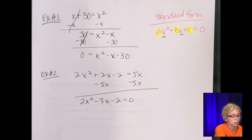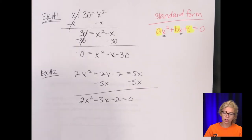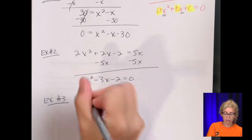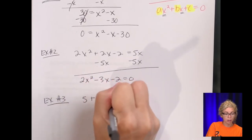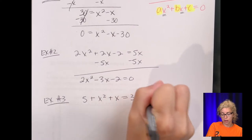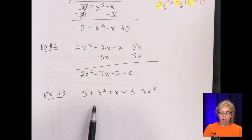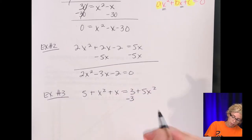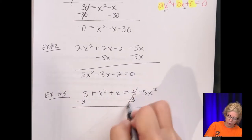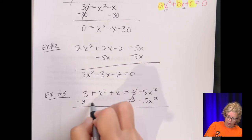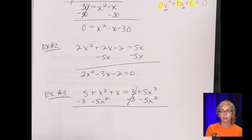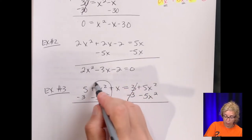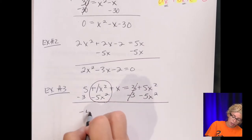Next section — still more standard form, a little bit harder. Example number three: five plus x squared plus x equals three plus five x squared. Here the x squared is on the left side and it's positive. So I'm going to move these two terms over and subtract in the same step, because on the right side they're both positive. We do end up with negative x squared, so combining: one minus five is negative four x squared.